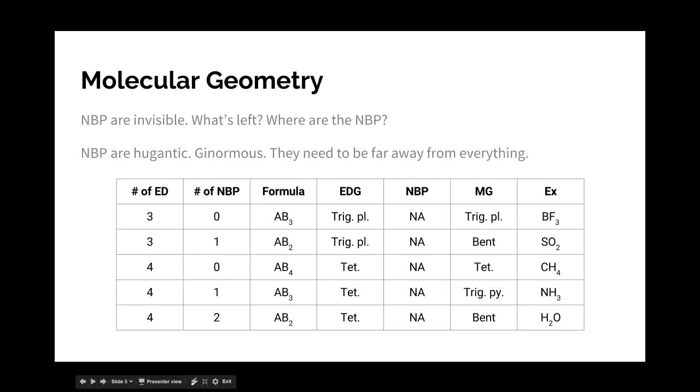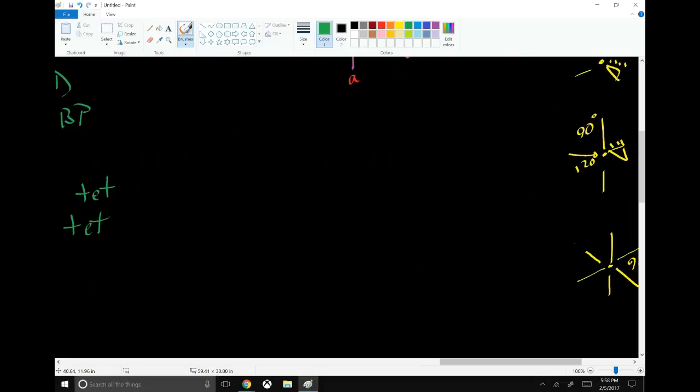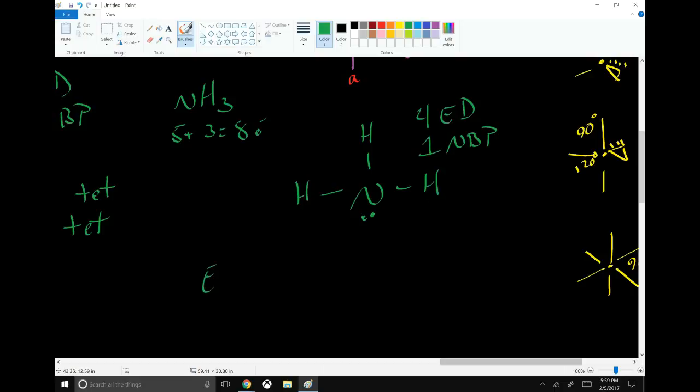Next up, we have 4 and 1. And our example for that is ammonia. Ammonia is pretty much our go-to example for this one. It's the best. So NH3, 5 plus 3 equals 8 electrons. And there we have it. 3 bonds, 1 non-bonding pair. So we still have 4 electron domains. Here's our 1 non-bonding pair.